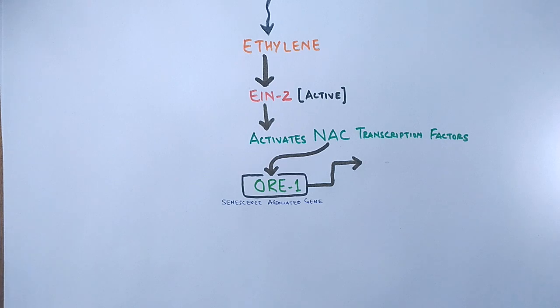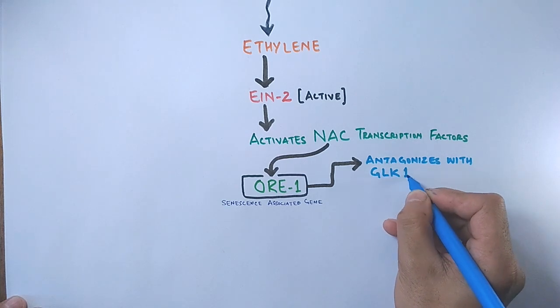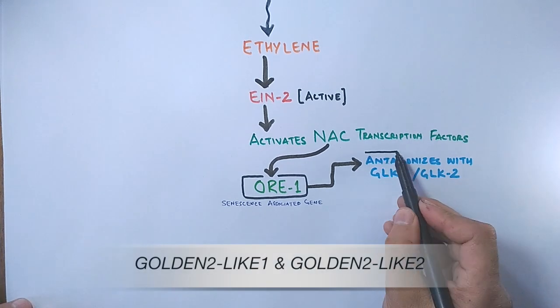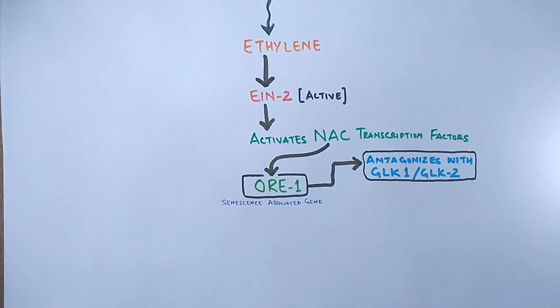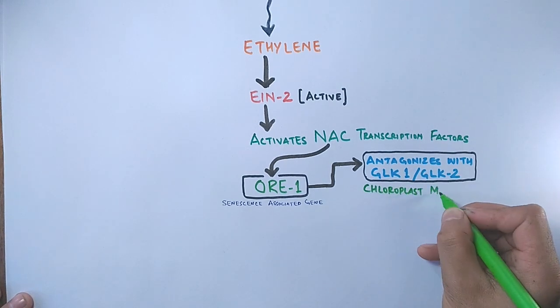First, we see the ORE1 antagonizes with the transcription activity of two genes, GLK1 and GLK2. Basically, it halts the GLK transcription factors, thereby no GLK genes are getting expressed. And we know these GLK1 and GLK2 genes are chloroplast maintainers.